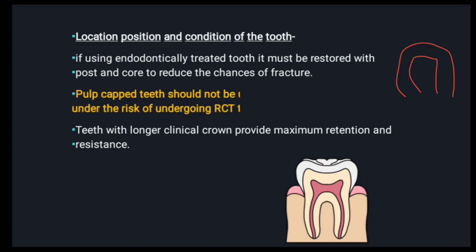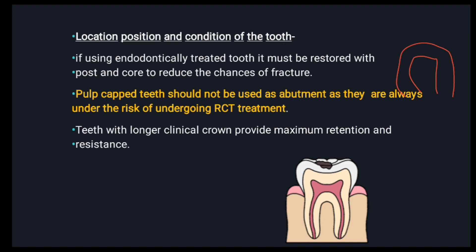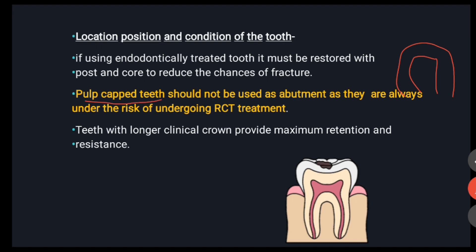One key point is that if a tooth has been pulp capped, it should not be used as an abutment. Why? Because a pulp-capped tooth carries a risk of requiring RCT treatment later on, and pain or other symptoms can develop. So it is not ideal to use a pulp-capped tooth as an abutment.